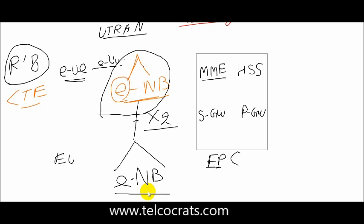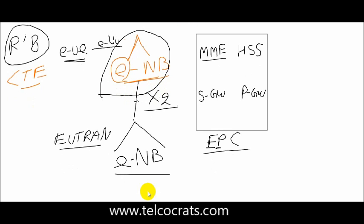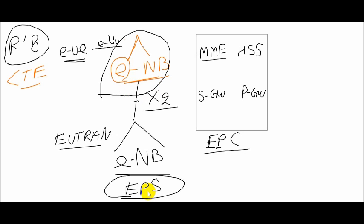There's something we are calling here as eUTRAN. Combining eUTRAN and EPC will give us the complete name of LTE. eUTRAN—we are calling here EPS—Evolved Packet System.